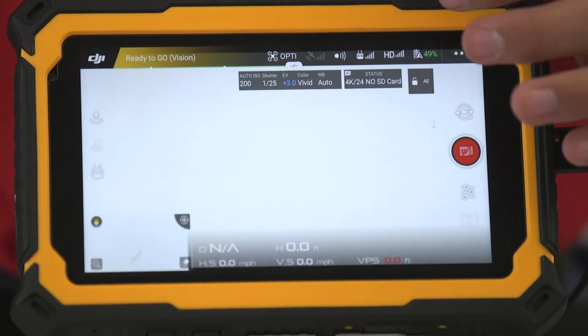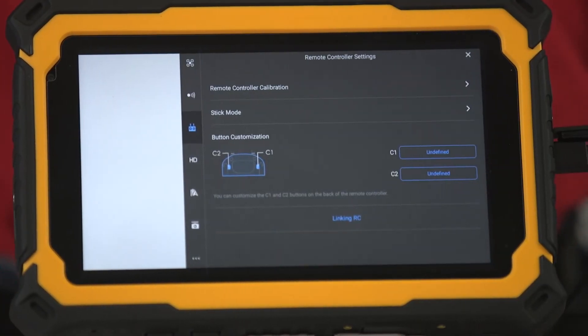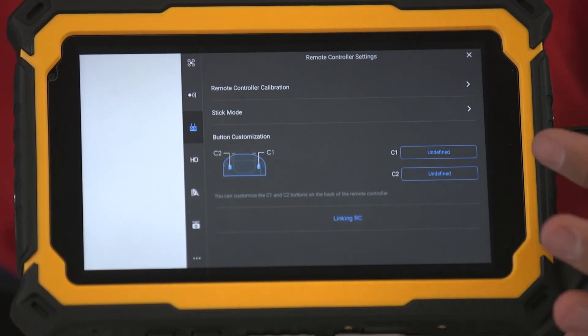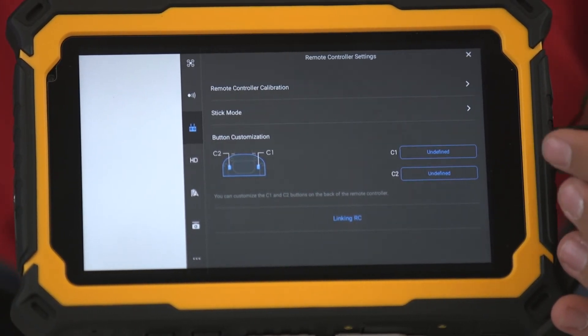Open the remote controller settings by pressing the remote control icon on top of the flight panel. It should open to show you remote controller calibration, stick mode, and button customization.